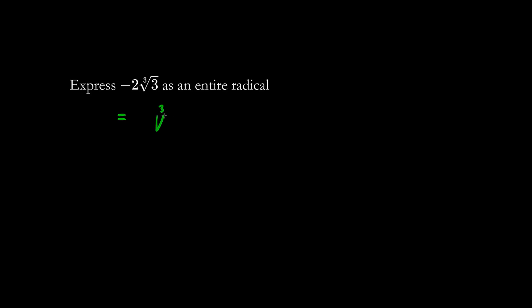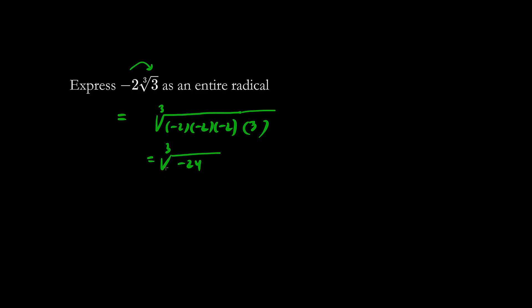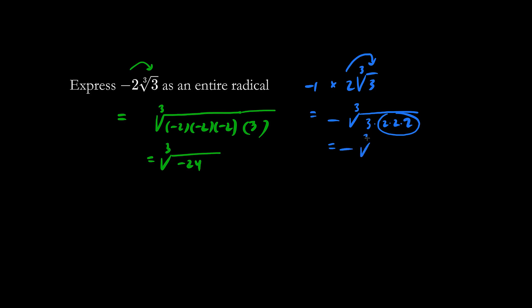Let's make this into an entire radical. We have a cube root jail here — it takes 3 friends to break out. Going backwards, we're allowed to throw the negative 2 into jail 3 times because there used to be three negative 2's, and this 3 remains. So this is the same as the cube root of negative 8 times 3, which is negative 24. Alternatively, leaving the negative outside and throwing the 2 into jail, we get negative times the cube root of 8 times 3, which is negative cube root of 24. Both answers are equivalent.